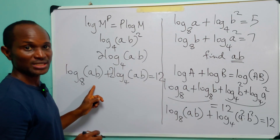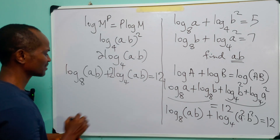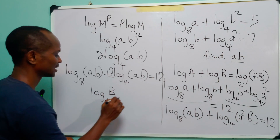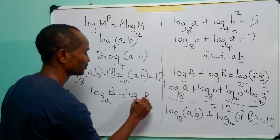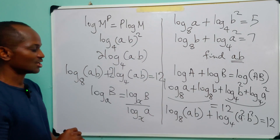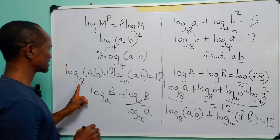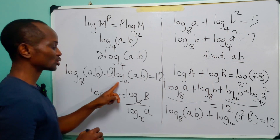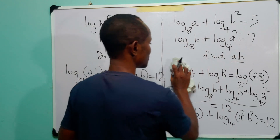Having gotten to this point, it will be best for us to work in the same base. We must remember that log base a of b equals log base x of b divided by log base x of a. Since we have base 8 and base 4, and both are powers of 2, it will be best for us to work in base 2.